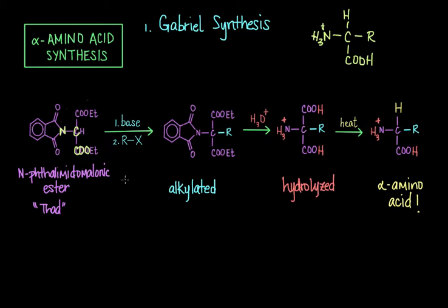So this is Gabriel synthesis in a nutshell. You start out with an n-phthalimidomalonic ester, and then you add a base and a source of an alkyl group, and you get an alkylated phthalimidomalonic acid here. And then you hydrolyze this to get your carboxylic acid group, as well as your amino group. Then you add a little heat for decarboxylation, and you wind up with the final amino acid that's produced here.